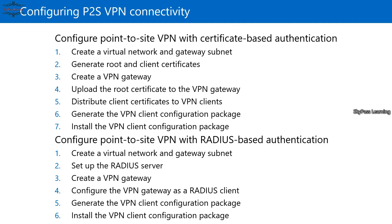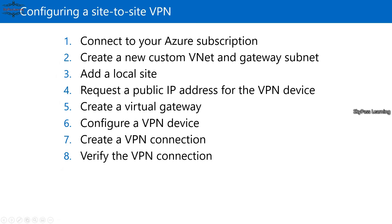If you want to configure a point-to-site VPN with RADIUS authentication, that is also possible. In that scenario, your RADIUS server — deployed on-premises — will be connected to your Azure network, and clients integrated with your RADIUS or on-premises infrastructure will connect through this network.